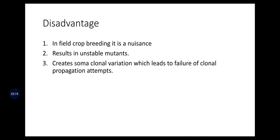Coming to the disadvantages: in field crop breeding, chimera is a nuisance. It results in unstable mutants and creates somaclonal variation, which leads to failure of clonal propagation attempts. When we go for tissue culture, our aim is equal maturity or equal expression of traits. Taking the example of G9 banana, the main goal is to get yield at the same time over large areas. If chimeras are produced there, the expression pattern will be different, leading to somatic variation that won't be helpful for commercial purposes.